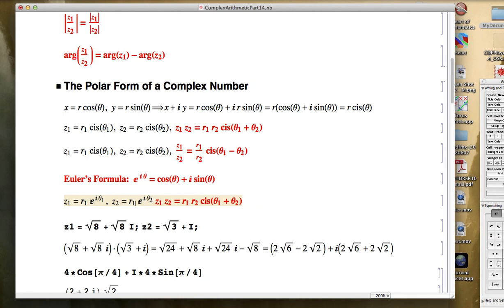So you can represent z1 as r1 e to the iθ1 and z2 as r2 times e to the iθ2, and then z1 times z2 will be r1 times r2 times e to the i(θ1 + θ2).